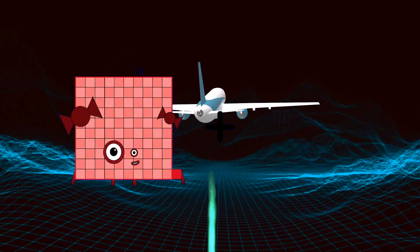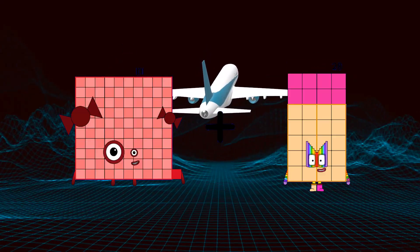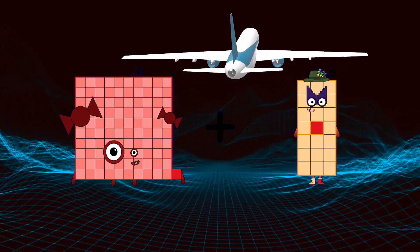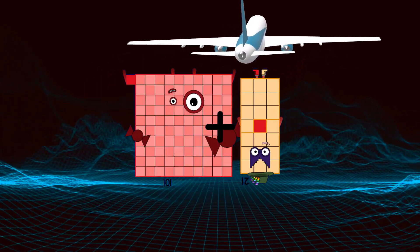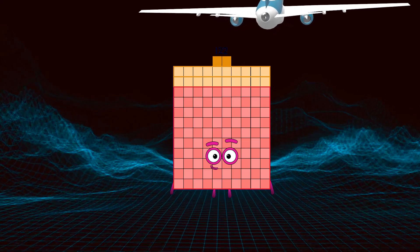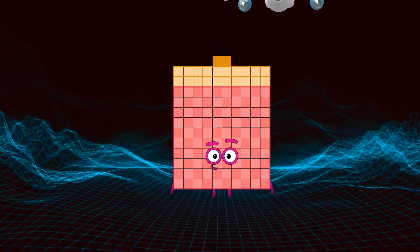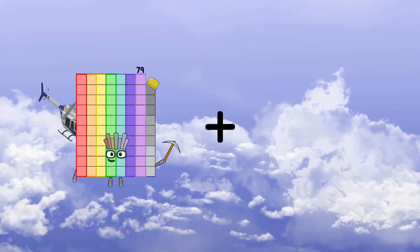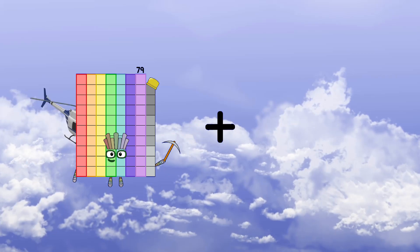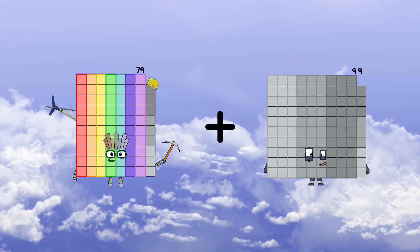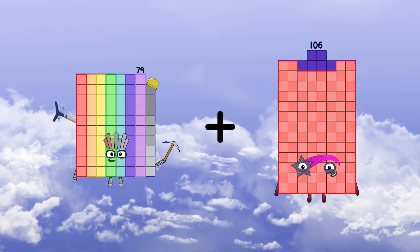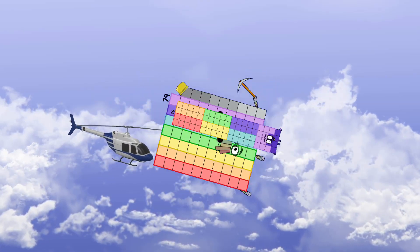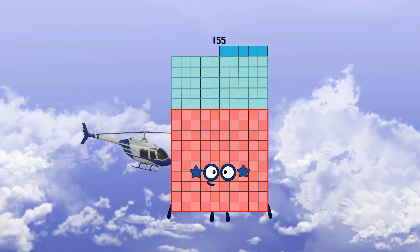101 plus 21 equals 122. 79 plus 76 equals 155.